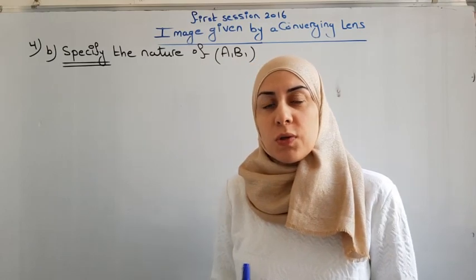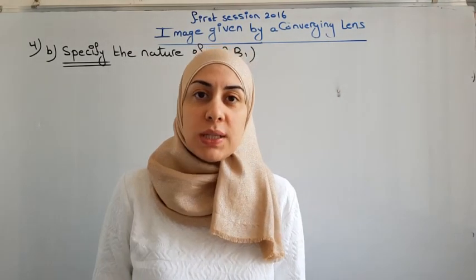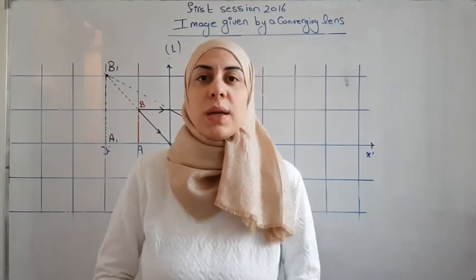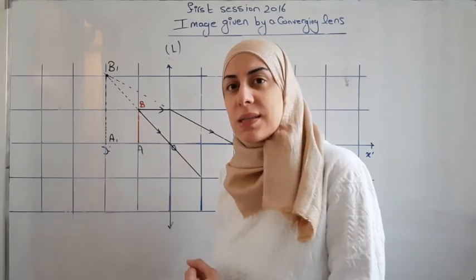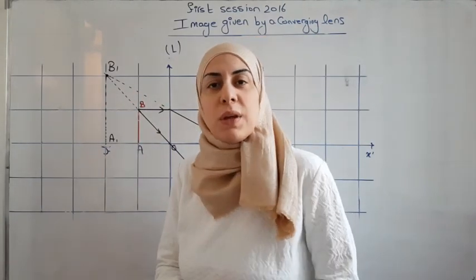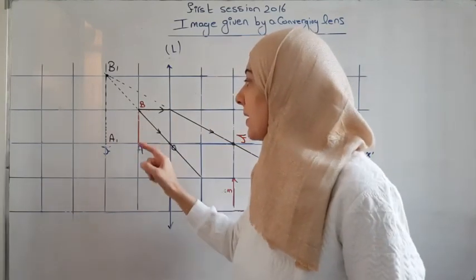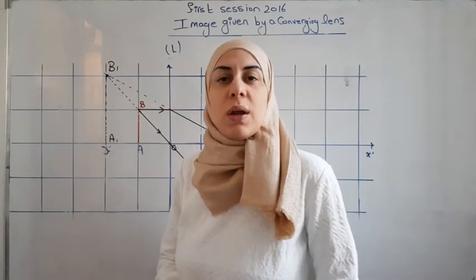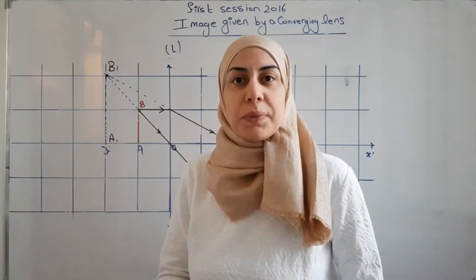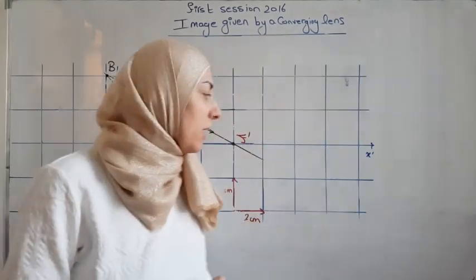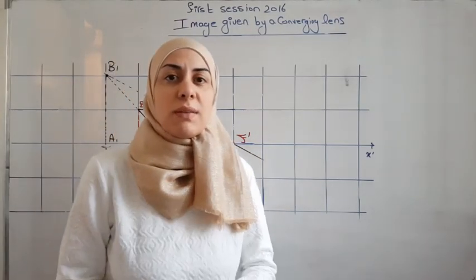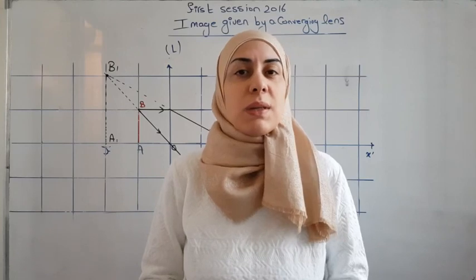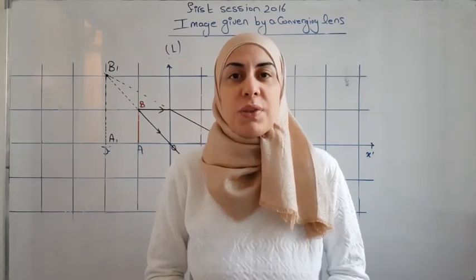We want to specify the nature of image A1B1. The image A1B1 of object AB is virtual. We can justify this in three ways: first, A1B1 is behind the lens — the object and image are on the same side of the lens. Second, A1B1 is erect relative to AB, meaning it is not inverted — B is above the axis and B1 is above A1 — and when the image is erect, it is virtual. Third, the emergent rays from B did not meet at B1; rather, the prolongations of these rays meet at B1, which means the image formed is virtual. Any one of these justifications is considered correct.